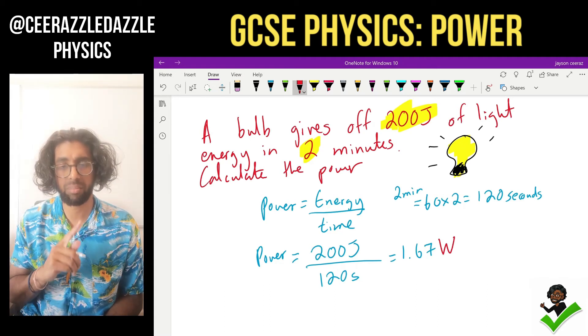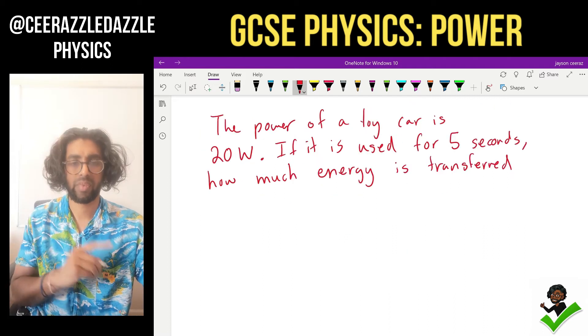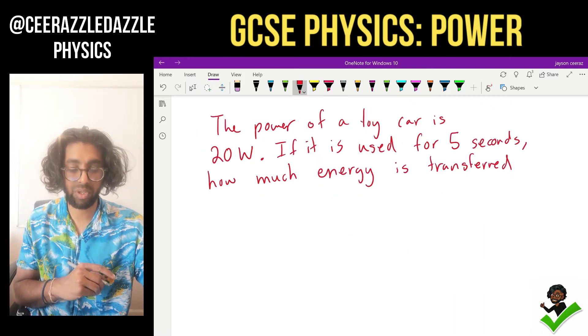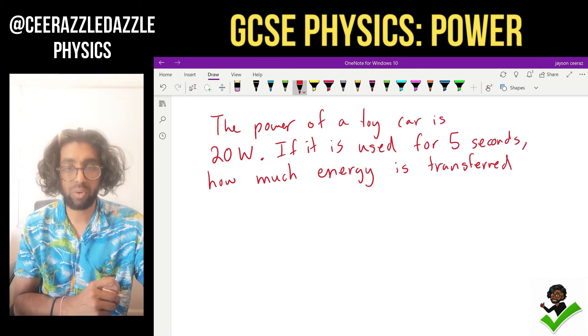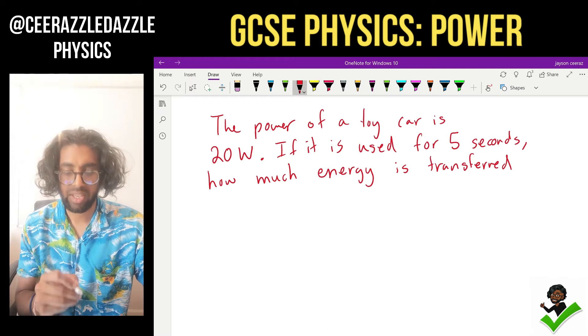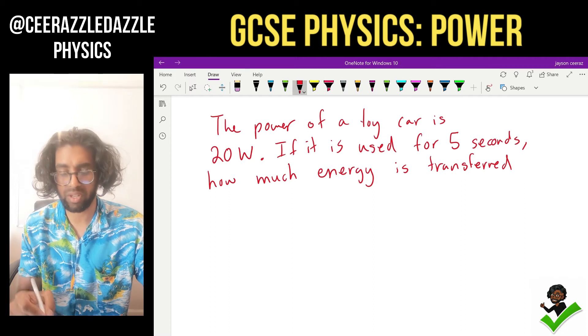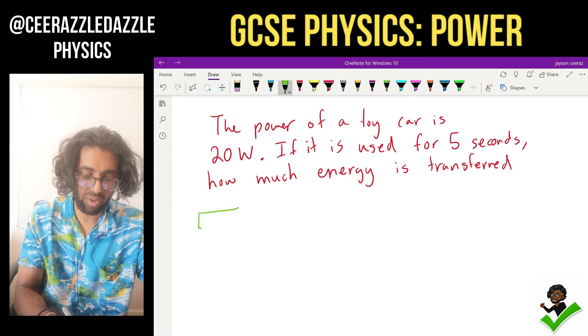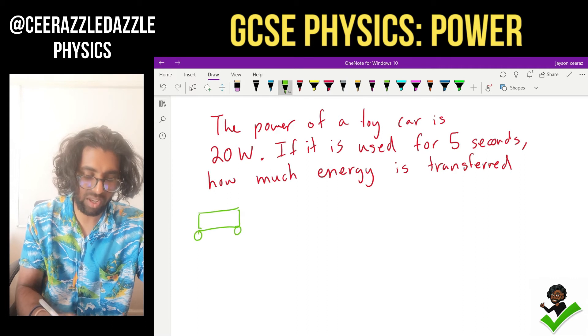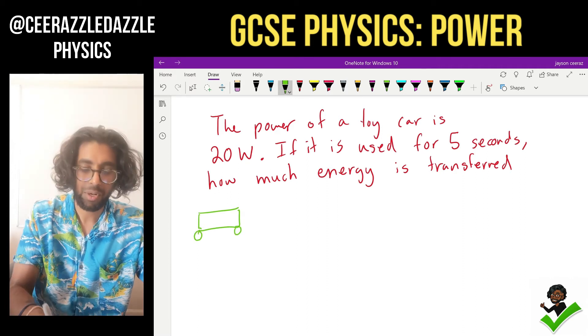Example number two. The power of a toy car is 20 watts. If it is used for five seconds, how much energy is transferred? So let's draw my little car out here. Look, GCSE art. That's my car.